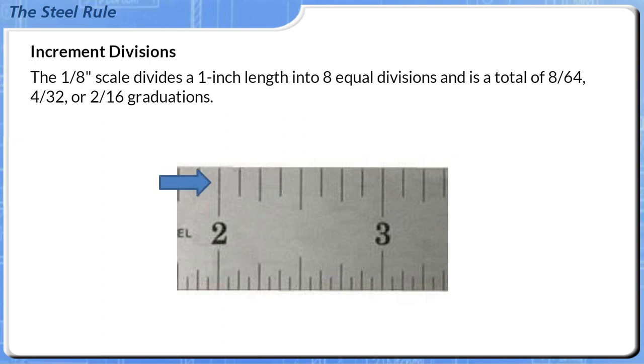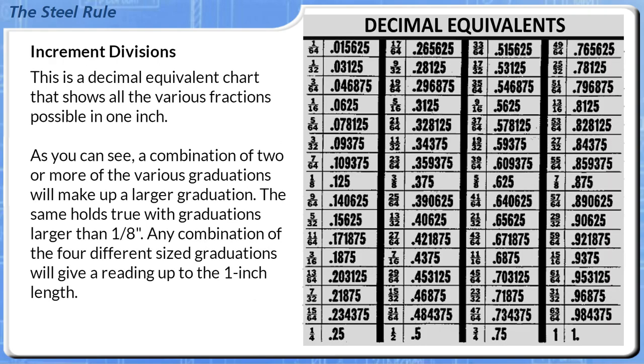The 1/8th inch scale divides a 1 inch length into 8 equal divisions and is a total of 8/64ths, 4/32nds, or 2/16ths graduations. This is a decimal equivalent chart that shows all the various fractions possible in 1 inch. As you can see, a combination of 2 or more of the various graduations will make up a larger graduation. The same holds true with graduations larger than 1/8th of an inch. Any combination of the 4 different sized graduations will give a reading up to the 1 inch length.